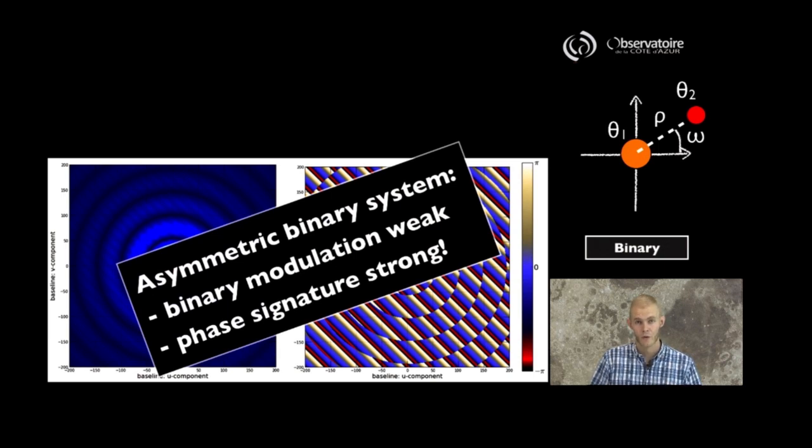This observable, the closure phase, is going to be particularly good at pinpointing asymmetries in our objects. And a binary system is going to be characterized by an asymmetric binary system is going to be characterized by a weak amplitude modulation, but a very strong phase or closure phase signature.